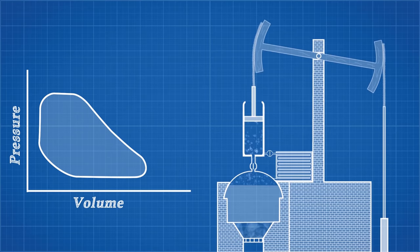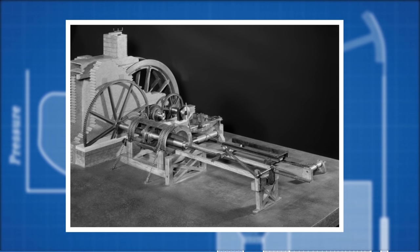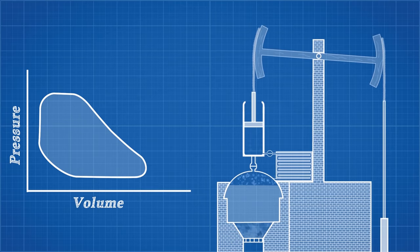That changed when John Wilkinson invented this machine. This boring machine allowed for precise machining of solid iron cylinders, which reduced steam leakage and made the piston cylinder stronger, thus allowing the max pressure to rise.